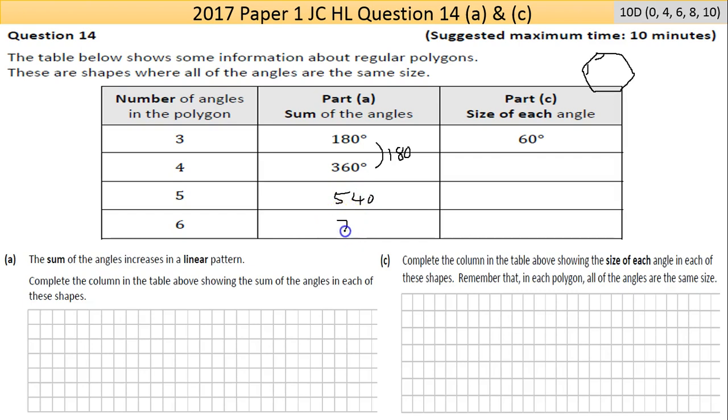Part A is asking that the sum of the angles increases in a linear pattern, going up by a steady amount with a constant slope. Complete the column in the table above showing the sum of the angles in each of these shapes. So we've done that, and the answers are built in there.